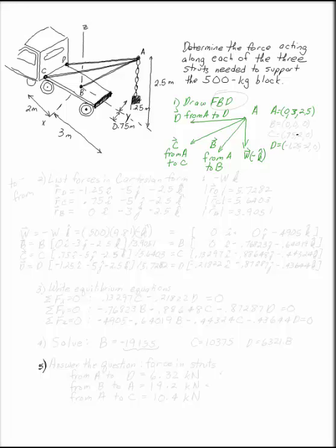A is 0, 3, 2.5. B is minus 1, 0.25, minus 2, 0. And then the two in the middle are B. B is at the origin. That one's easy. 0, 0, 0.